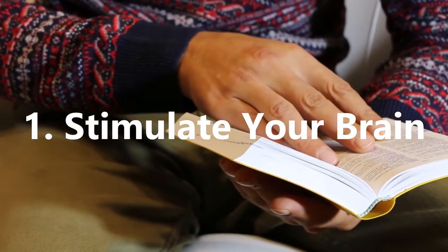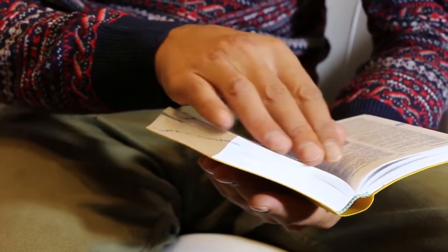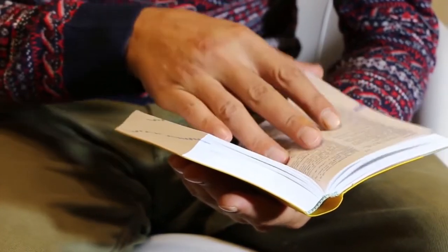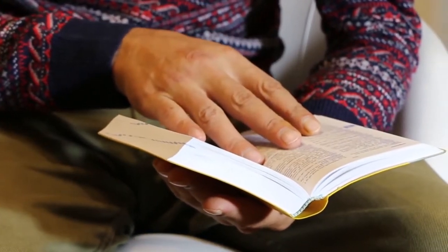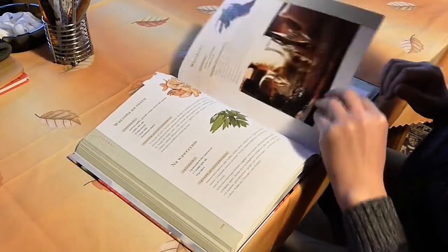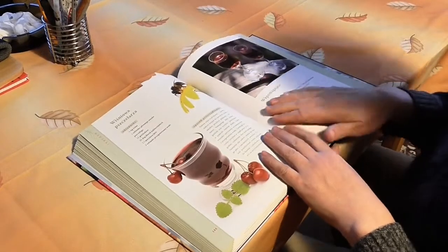Stimulate your brain. Imagine the brain is like a muscle. When you exercise a muscle, it stays stronger and healthier, which over the course of your life means you're likely to feel stronger as you age.